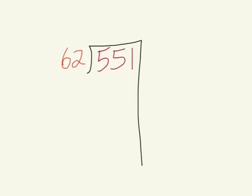Let's think about this. We had a couple of estimates. Maybe we can use our estimates to figure out what our first step should be — that's why we should always estimate first. We said 10 groups of 60 would make 600, but we definitely don't have 600 miles to work with. We also said 6 times 9 was 54, which is really close to 55. So maybe starting with 9 groups might be a smart move.